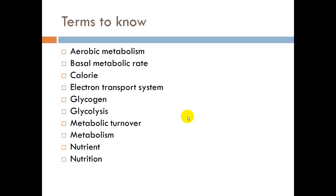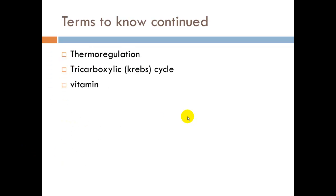Terms to know for the entire chapter: aerobic metabolism — with oxygen; basal metabolic rate — consistent calorie burn at rest; calorie — a measure of energy produced by specific amounts of food; electron transport system — where most ATP is made; glycogen; glycolysis; metabolic turnover; metabolism; nutrients and nutrition; thermoregulation; tricarboxylic acid or Krebs cycle; and vitamin. Be sure to know all those terms.